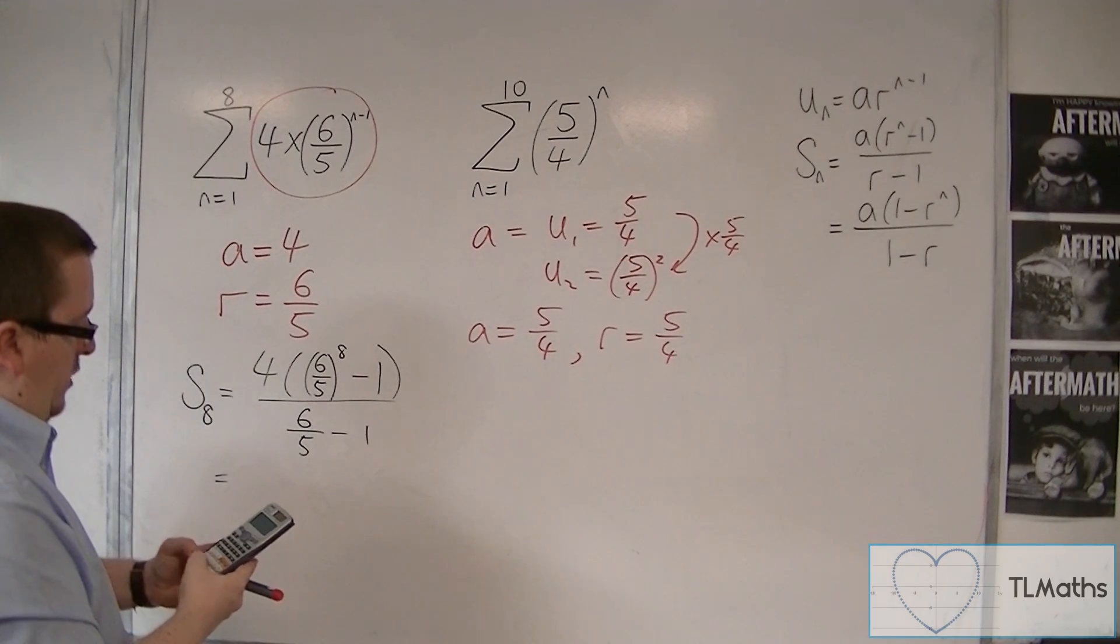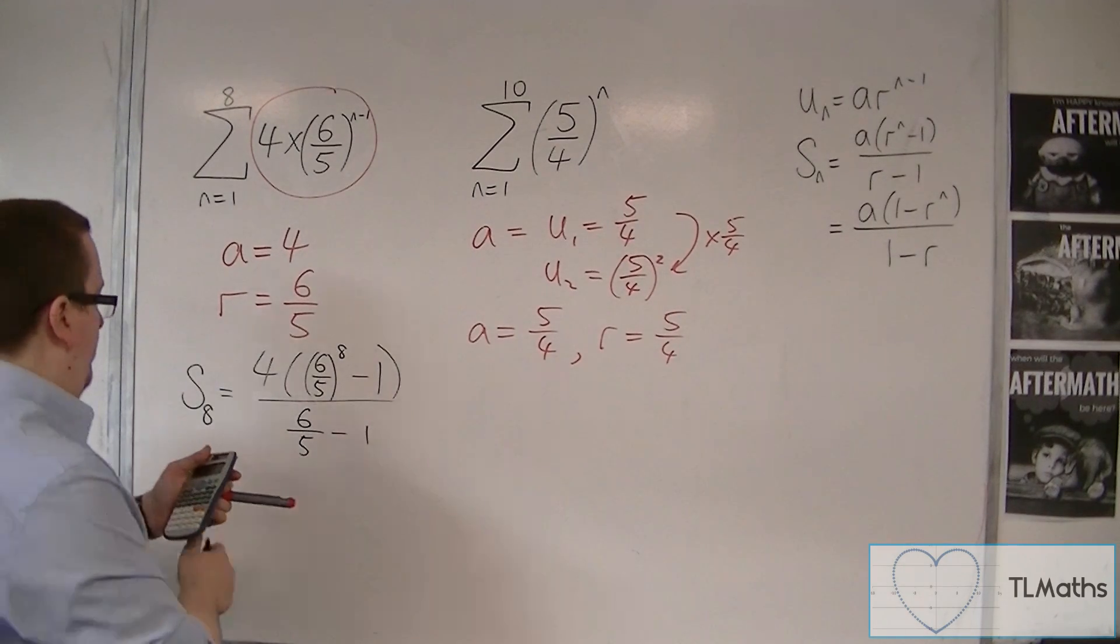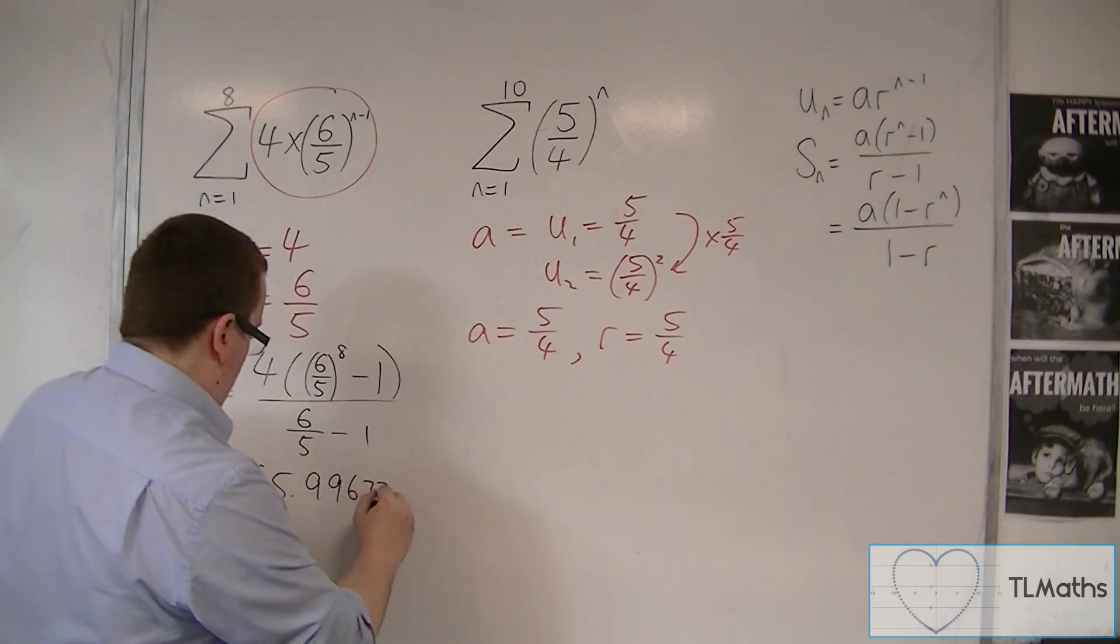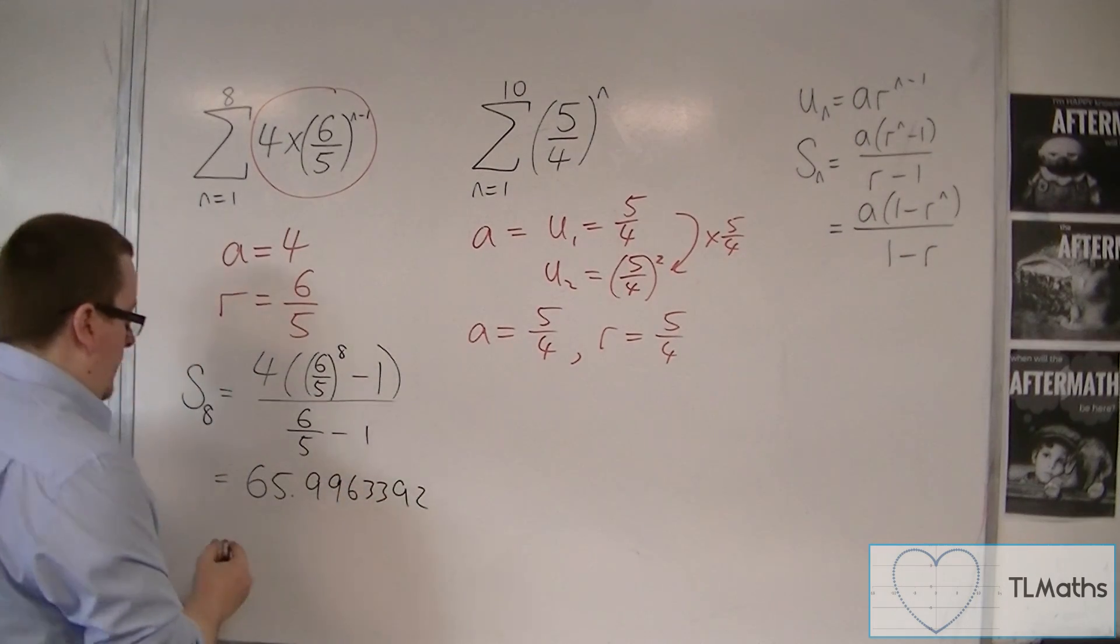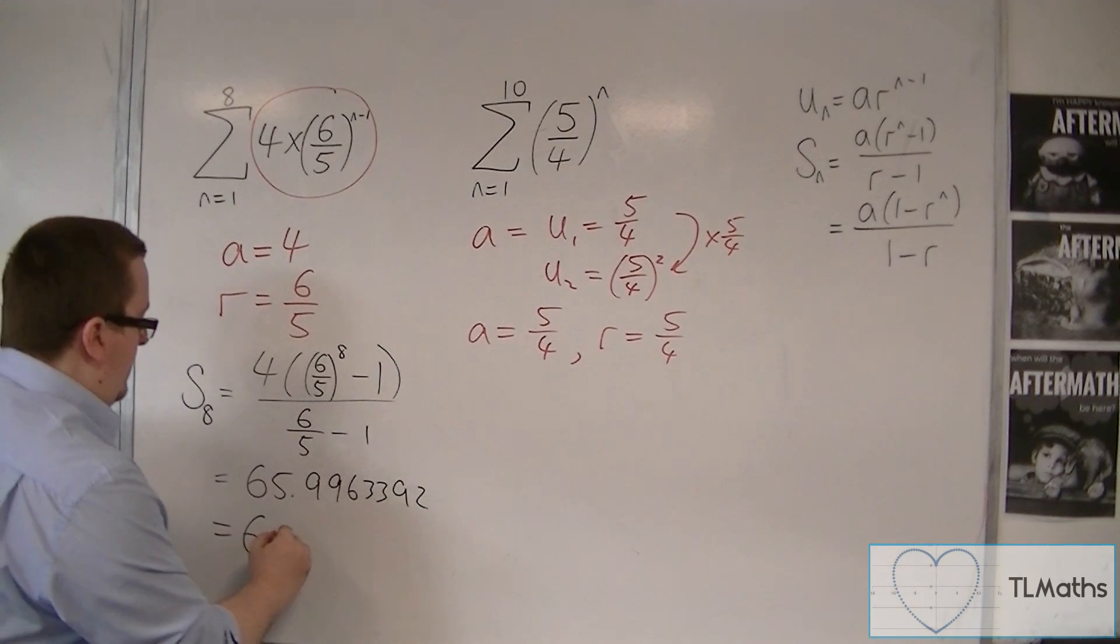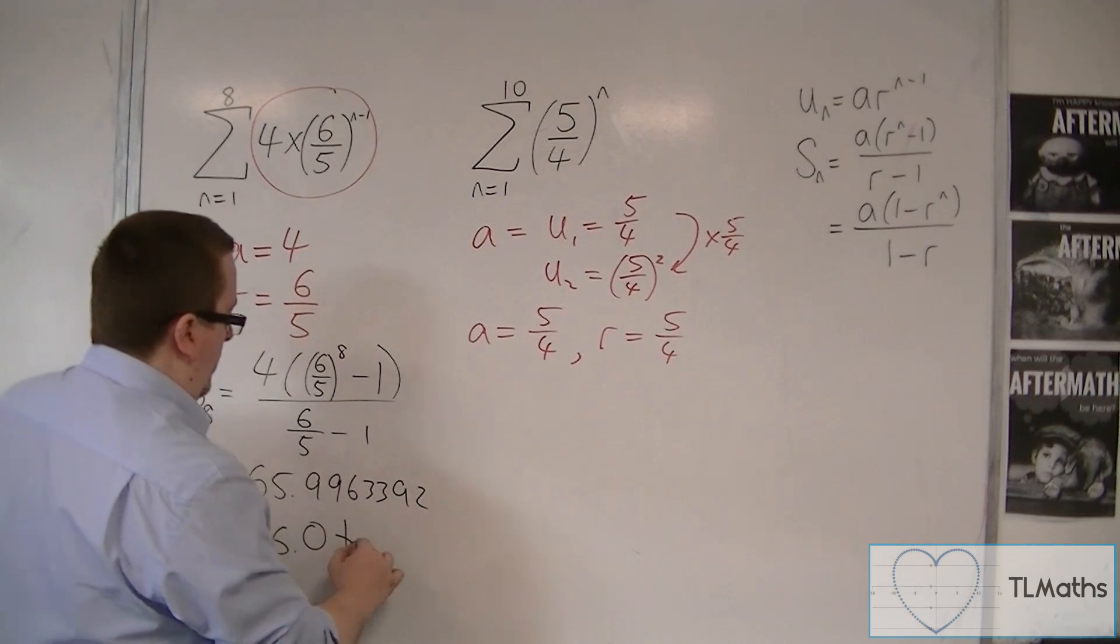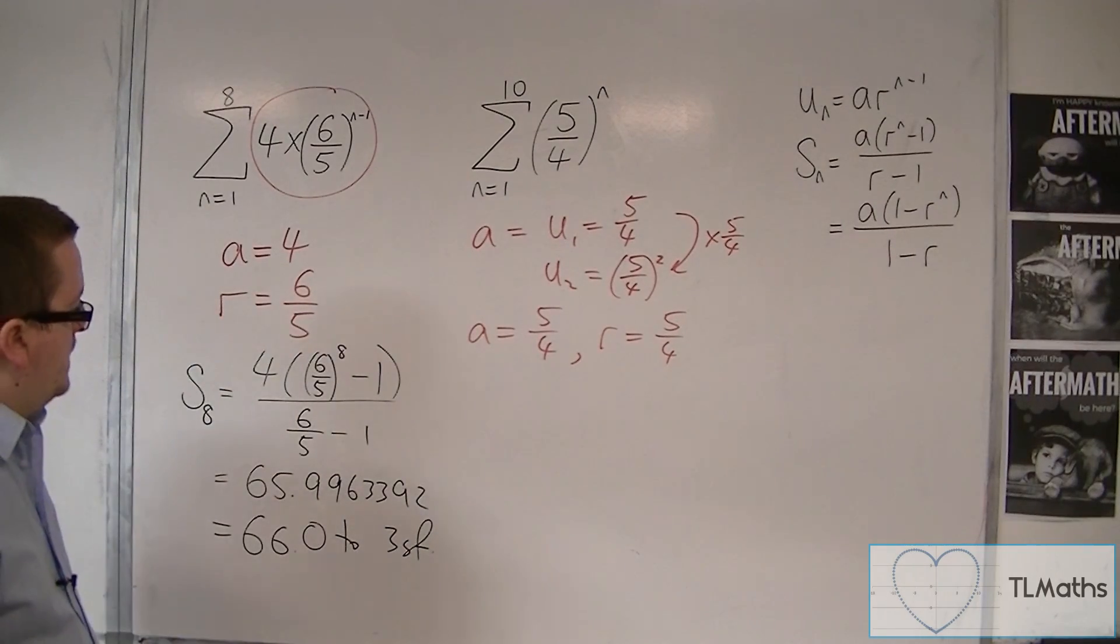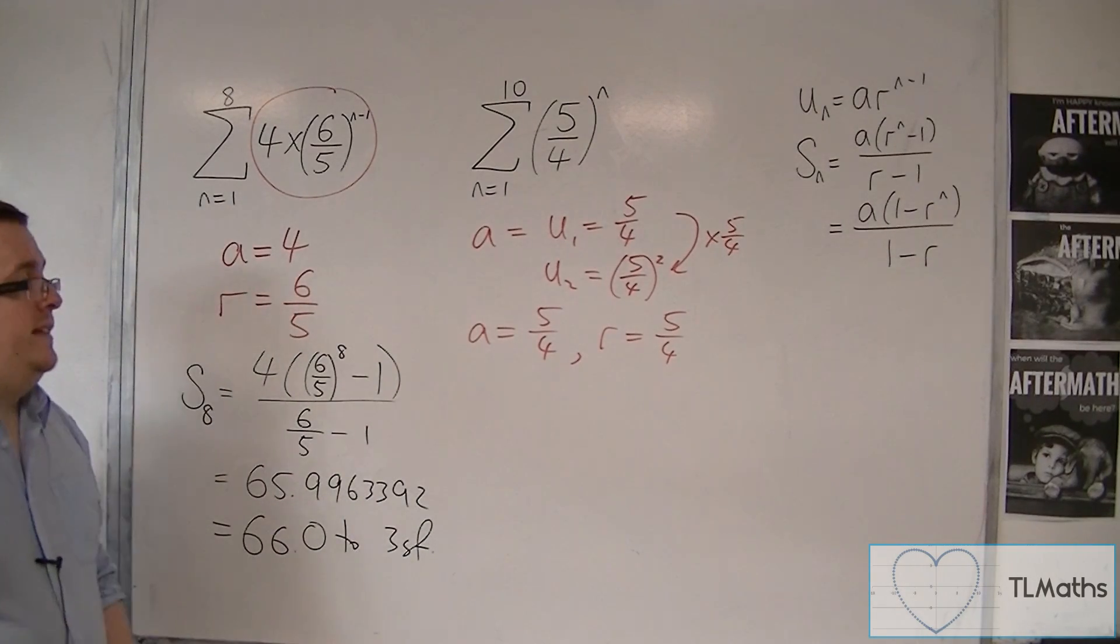And that gets me 65.9963392. So that's equal to 66.0 to 3 significant figures. Okay, so that is the sum of the first 8 terms.